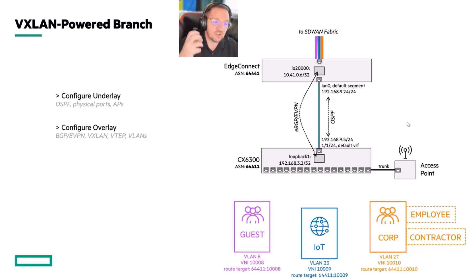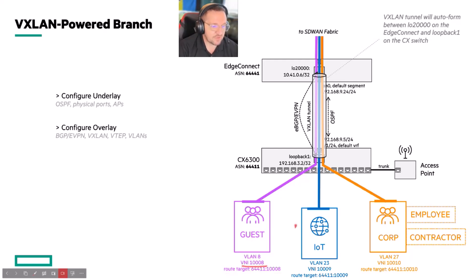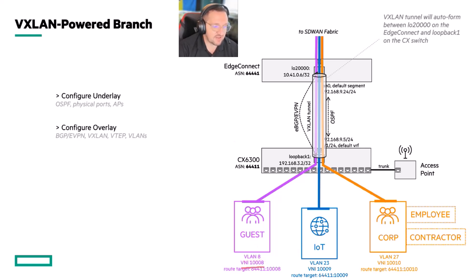The first thing that happens is you bring up the EBGP EVPN session. This EVPN session is the key, because once it comes up between these two loopbacks, the system can build the VXLAN tunnels and transfer the VNIs from each of these overlays. Each overlay has a route target, a VNI — which has to be mapped appropriately into the EdgeConnect — and one or more VLANs. In this case, we have a direct mapping of VLAN 8 to VNI 1008, which maps to the purple segment in the EdgeConnect. IoT and Corp follow the same pattern.